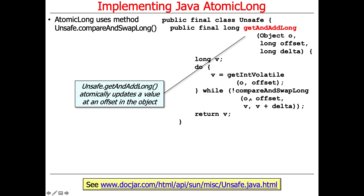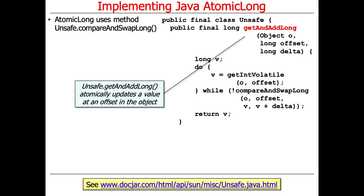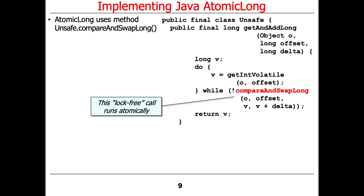There's a method in the Unsafe class called getAndAddLong, and this is another method that uses compareAndSwapLong. What it does is atomically update a value at a particular offset in an object. It's passed the object, the offset into that object, and the value we want to add at that offset. It then runs this lock-free compareAndSwapLong method in a loop.